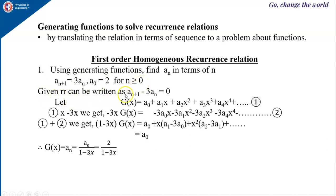The recurrence relation can be written as a_{n+1} − 3a_n = 0. Let the general generating function be g(x) = a_0 + a_1·x + a_2·x² + a_3·x³ + ... — equation 1. Multiply equation 1 by the coefficient of the lower term, which is −3, so multiply by −3x: we get −3x·g(x) = −3a_0·x − 3a_1·x² − ... — equation 2.